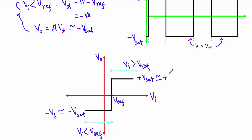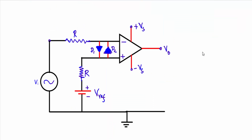In a practical non-inverting operational amplifier comparator circuit, two diodes D1 and D2 are connected in opposite directions and in parallel between the two input terminals. These diodes control the excess amount of input voltage applied between the inverting and non-inverting terminals, and are therefore called protective or clamp diodes of the operational amplifier.